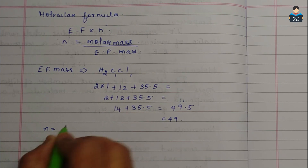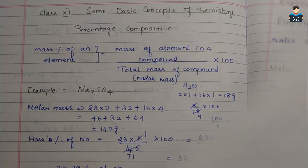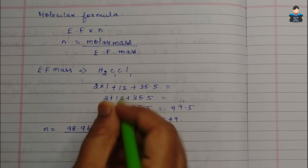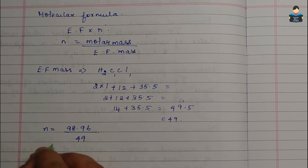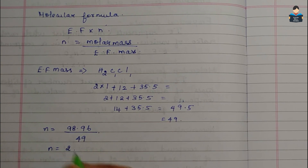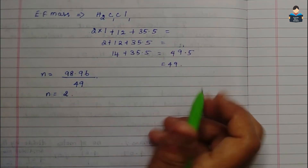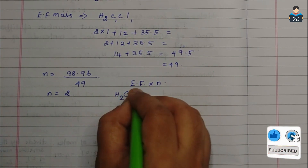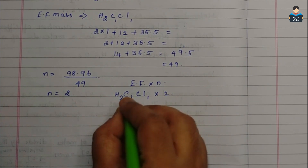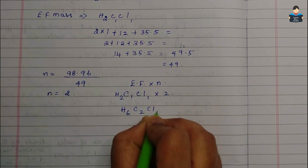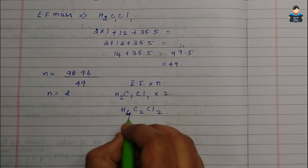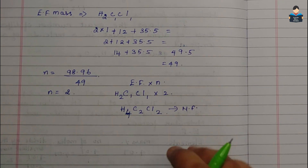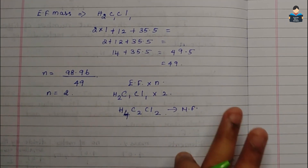N = molar mass / empirical formula mass = 98.96 / 49.5 ≈ 2. So molecular formula = H₂CCl × 2 = H₄C₂Cl₂. This is the molecular formula of the compound. So in this video we have found the empirical formula and molecular formula. For the next topic, please like, share, and subscribe. Thank you.